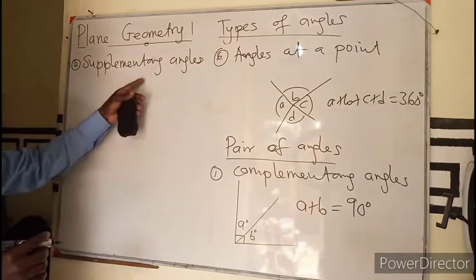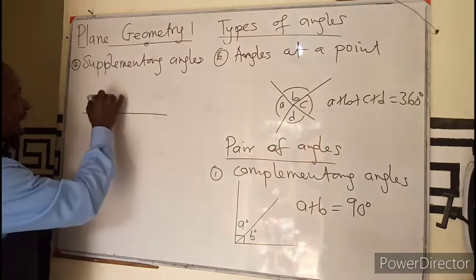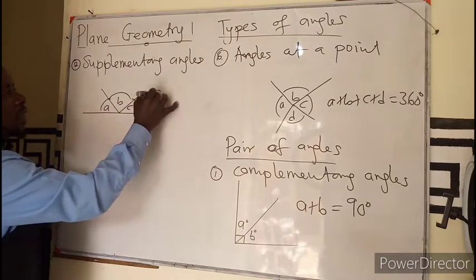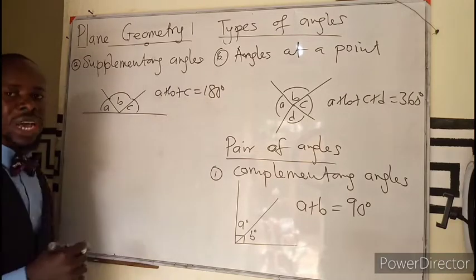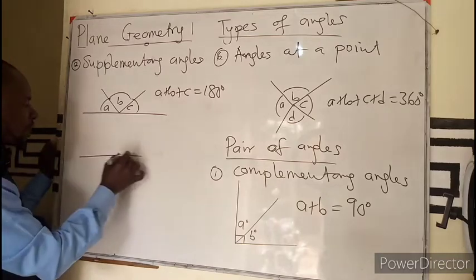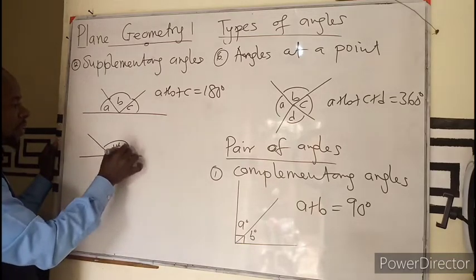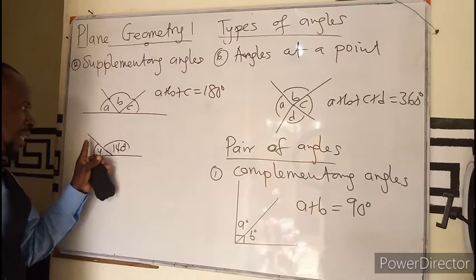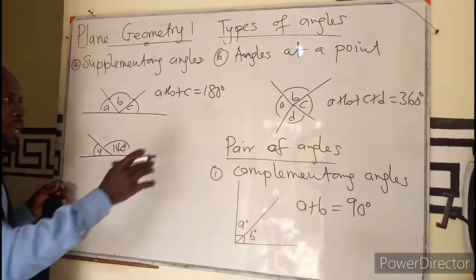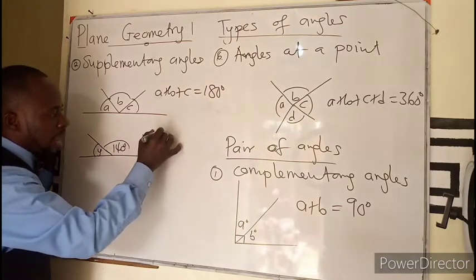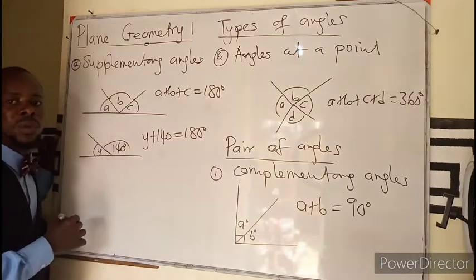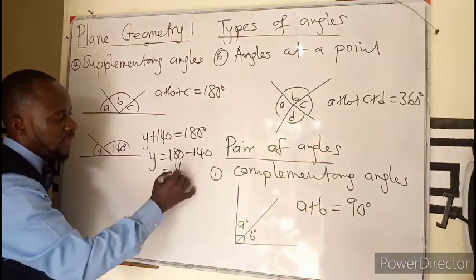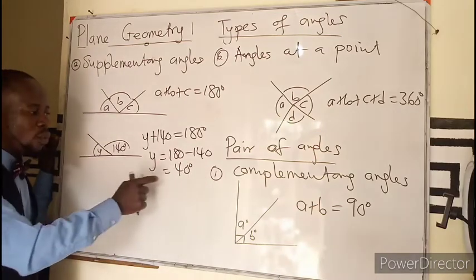Then we have supplementary angles — all angles that add up to 180 degrees. If I have angles A, B, C and I add A plus B plus C to get 180, I call them supplementary angles. For example, if I have an angle of 140 degrees and an angle Y, and I'm asked to find Y: angles on a straight line add up to 180. Therefore, Y plus 140 equals 180, so Y equals 180 minus 140, which gives 40 degrees.